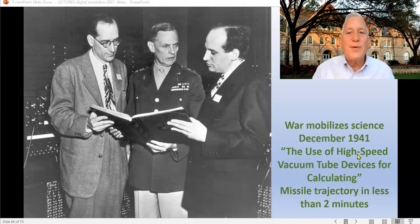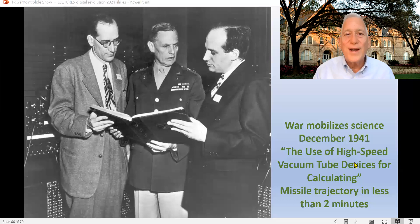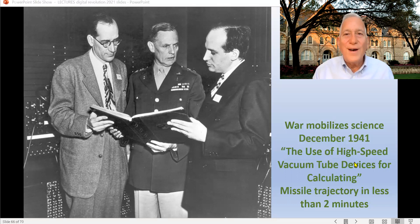But then Mauchly, working with his friend Presper Eckert, writes a paper called 'The Use of High-Speed Vacuum Tube Devices for Calculating Missile Trajectory,' saying you can calculate a trajectory in 100 seconds — less than two minutes. They show it to the people at Army Aberdeen Proving Ground, not far from the University of Pennsylvania, and get a big contract from the Army to build a machine that will tabulate the firing tables for missile trajectories. Once again, it was understood that World War II was not just going to be won by weapons, but by computation power — by computers.